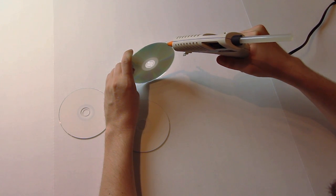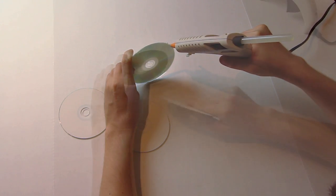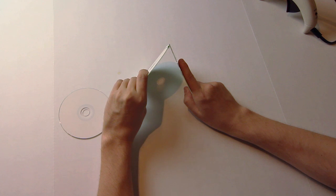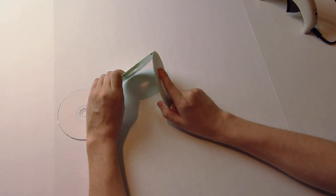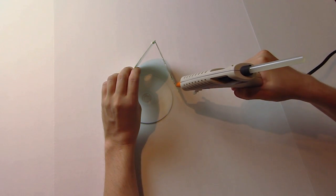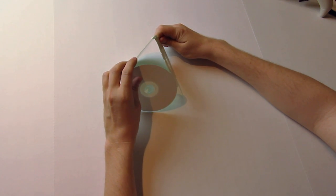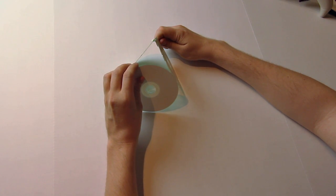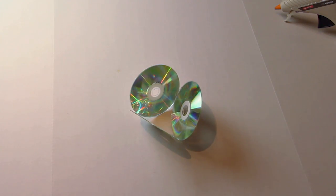So once you have the disks that you want to use, go ahead and grab a hot glue gun or a bonding agent and form a lampshade-like structure. This is going to be our reflection panel. You can use more CDs or DVDs if you want. I found three to make the perfect cone shape.